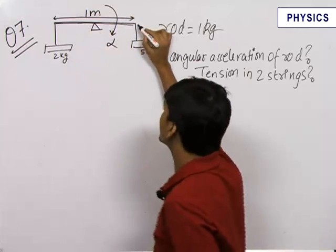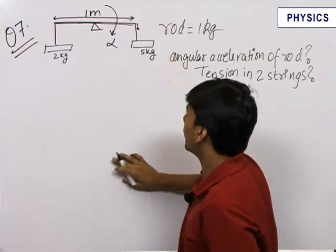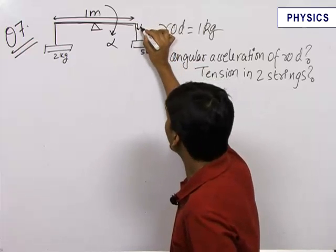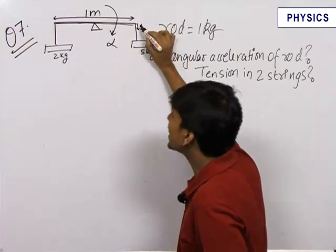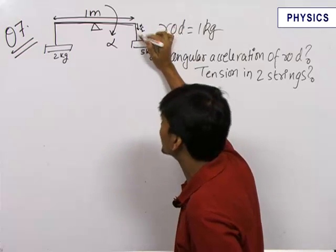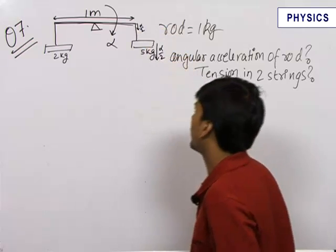So the acceleration of this point, tangential acceleration of this point that is vertically below will be alpha by 2, that is alpha into half meters. Since the initial acceleration of this point is alpha by 2, by string constraint, the initial acceleration of 5 kg mass will be alpha by 2 below.